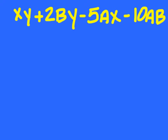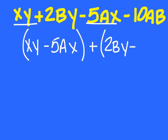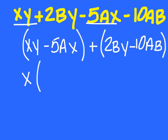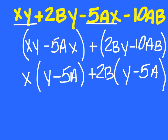Example two. What two terms are you going to use to start with? We'll use xy minus 5ax — that's a good choice to avoid the minus sign — and then 2by minus 10ab. What can I take out of the first group? x — and be left with y minus 5a. What can I take out of the second group? 2b — and what's left? y minus 5a. So it's (x plus 2b)(y minus 5a).